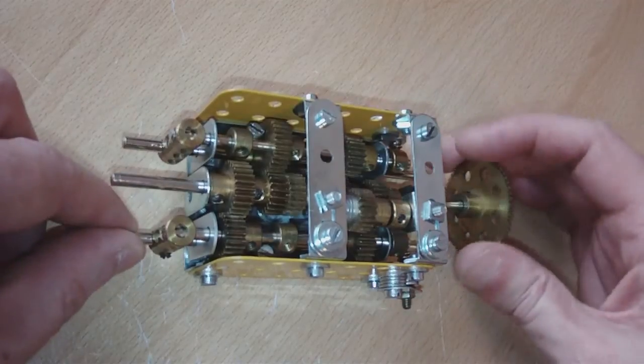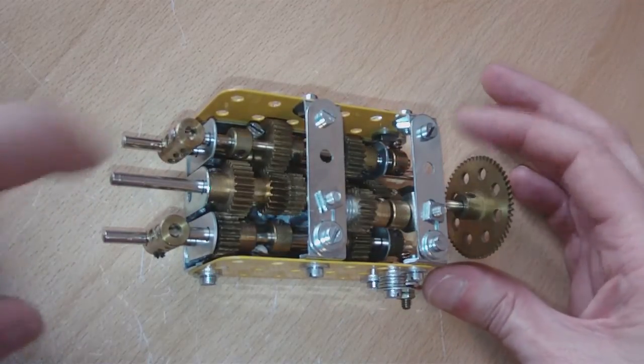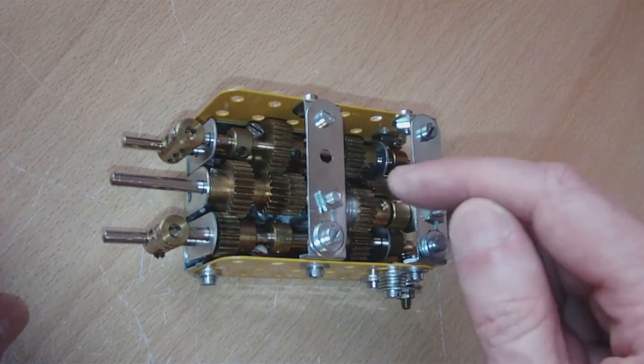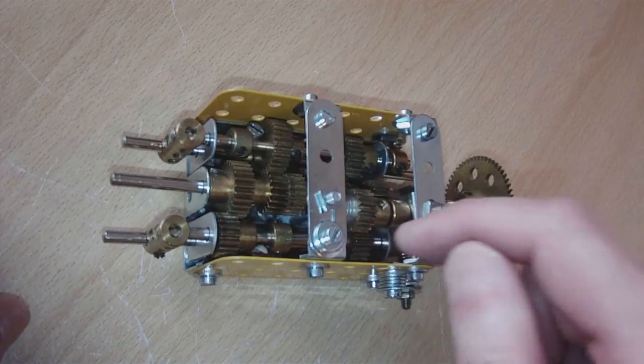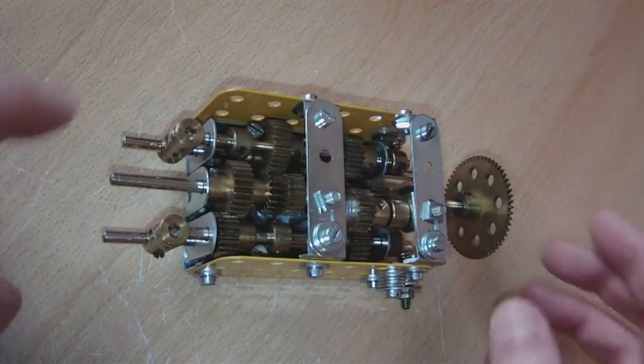First of all we have reverse gear, like so. That's the output shaft, this is the input shaft here. 25 tooth gear going to a 19 idler to a 25 tooth, over to this 19 tooth to this 25 tooth.